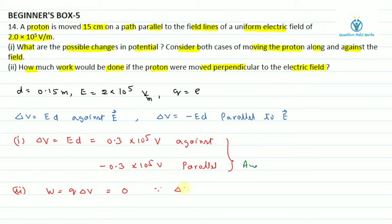electric field ke perpendicular direction mein koi potential change nahi hoga. Aapko pata hoga electric field ke perpendicular direction mein equi potential surface draw ki jati hai to sabhi jagah potential same hoga to work done 0 hoga. Yeh second part ka answer hai.